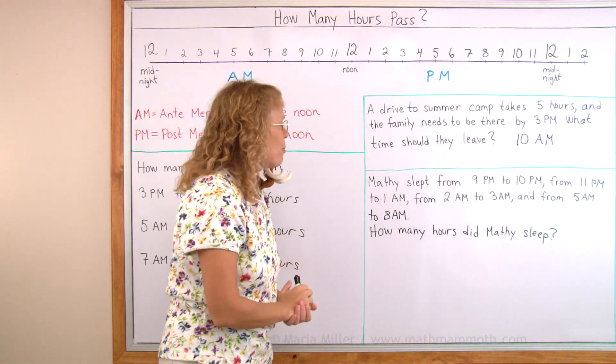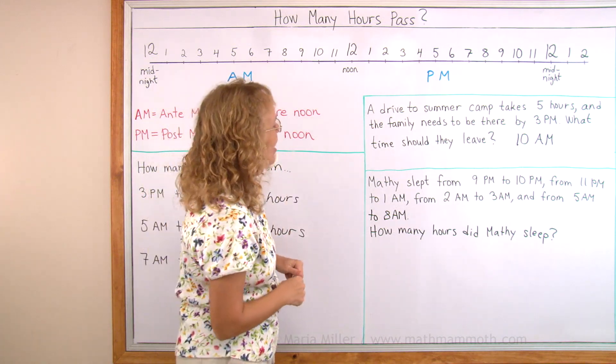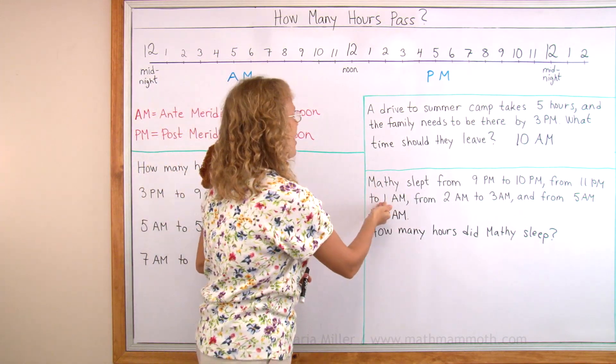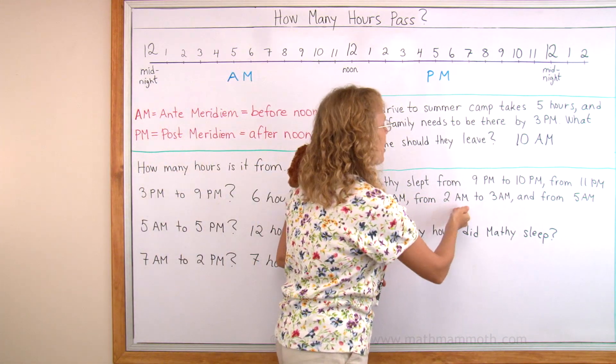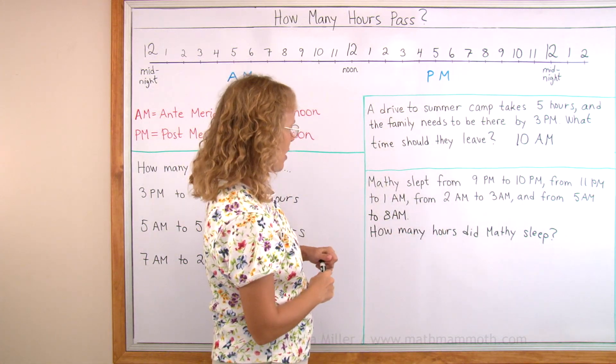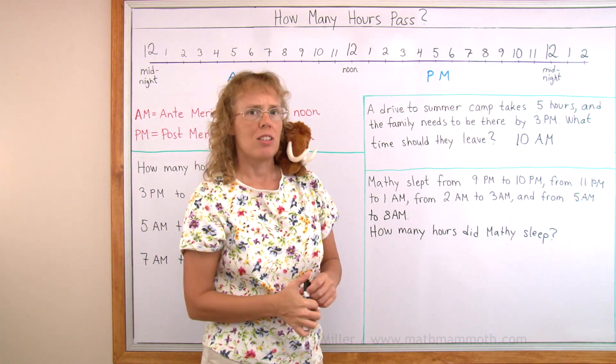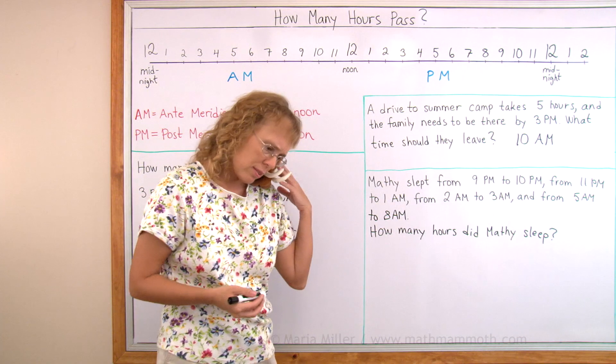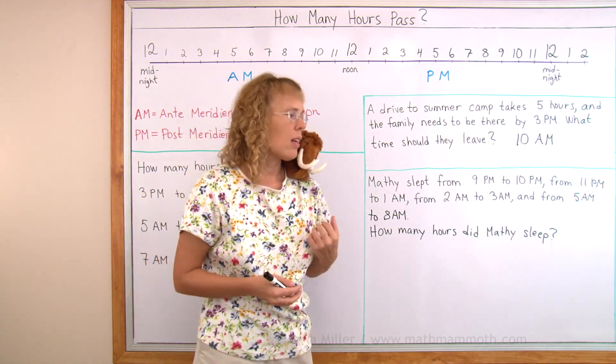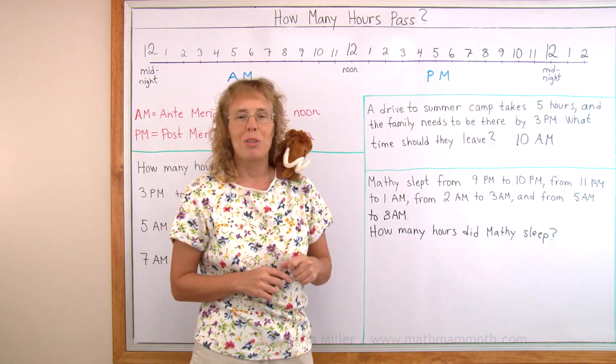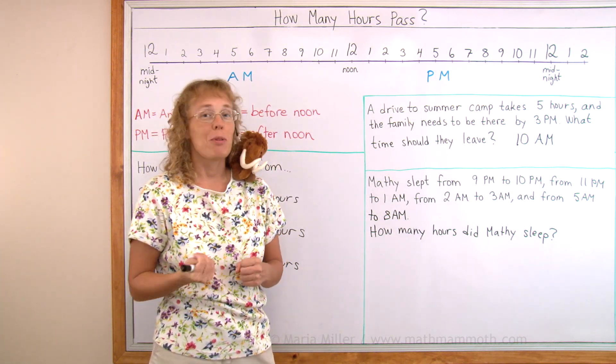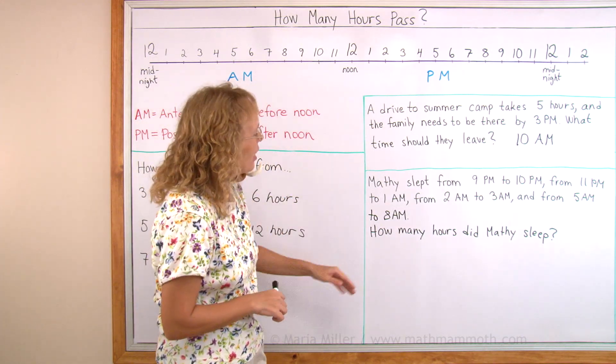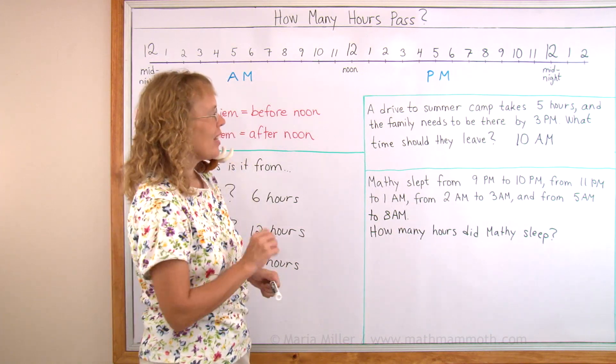And then a word problem by Mathie. Thank you, Mathie, once again. Mathie slept from 9 PM till 10 PM, from 11 PM to 1 AM, from 2 AM to 3 AM, and from 5 AM to 8 AM. That is a really strange sleeping schedule, Mathie. What happened? Oh, okay. A really hard math problem. He was thinking about a really hard math problem. It kept him awake and he couldn't sleep well. That's understandable. So, how many hours did Mathie sleep?